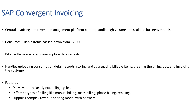SAP CI can take in BITs from any kind of charging system. In an integrated BRIM solution implementation it would be SAP CC, but it can take in BITs from other systems as well. Once these items reach SAP CI, the application handles uploading consumption detail records, storing billable items, aggregating billable items, creating the billing document, and invoicing the customer.